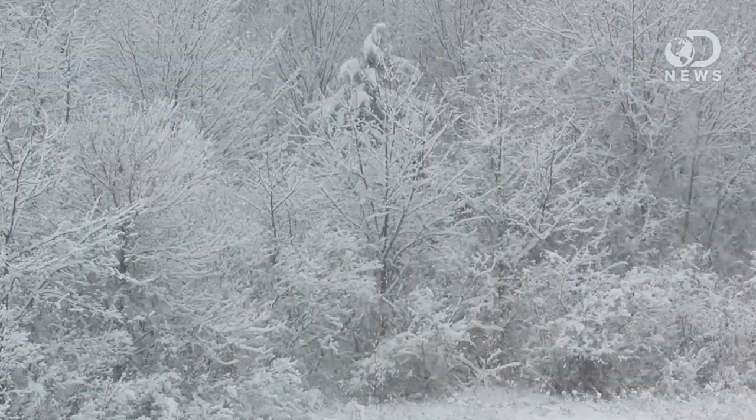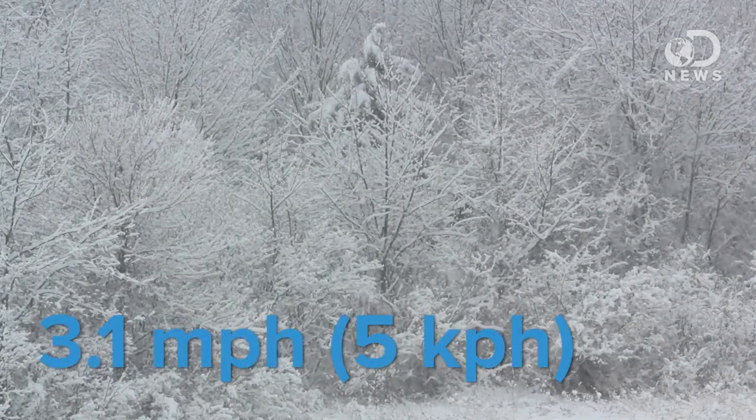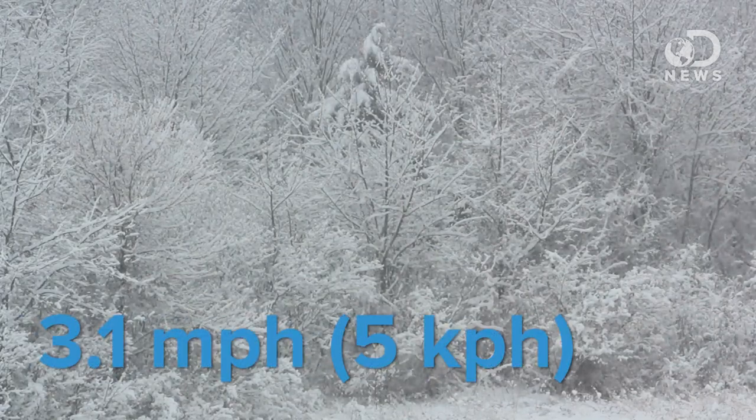Contrary to popular belief, snowflakes are not all different or unique. In fact, they form a crystalline pattern, and crystals follow very specific rules, so they are all essentially pretty similar. Snowflakes fall at 3.1 miles an hour, and as they do, the temperature, humidity, and wind speed will all affect the snowflake's consistency.